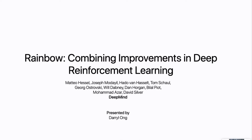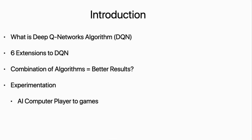Let me introduce to you today about Rainbow, combining improvements in deep reinforcement learning. So what is this paper about? Firstly, I'll introduce what the Deep Q-Network algorithm is and also the six extensions to DQN. Does it mean that combining algorithms will always give you better results? And lastly, I'll show you the experimentation — what the authors did with this paper.